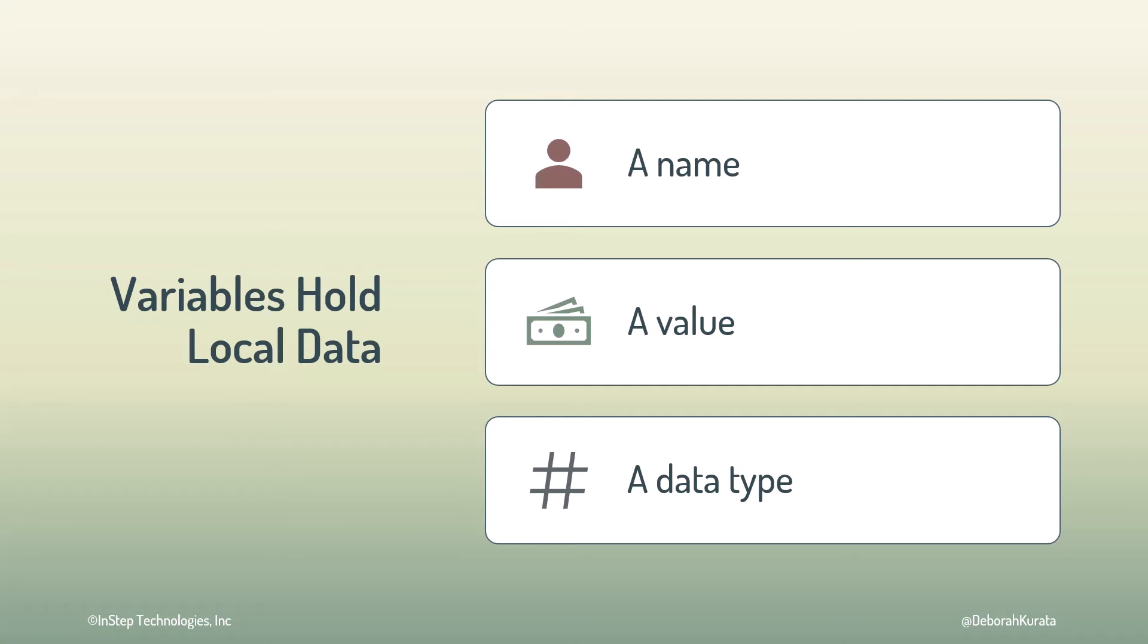For example, for our pet cafe, we ask the user for the number of pets they want. We give the variable a name, such as numberOfPets. It may have a value of three, and the data type is a number, meaning that the number of pets must always be a number.